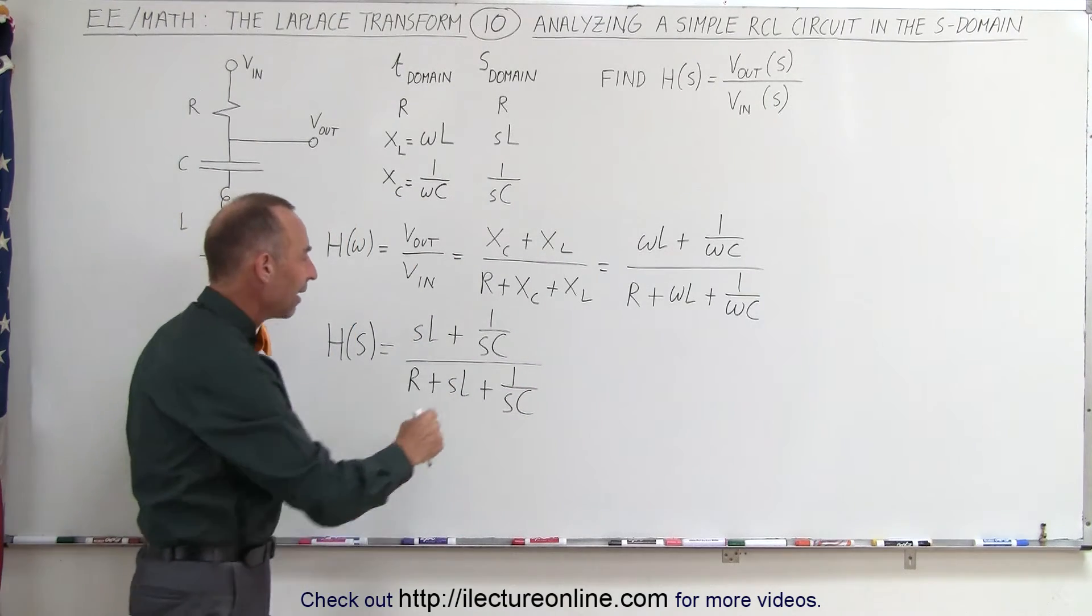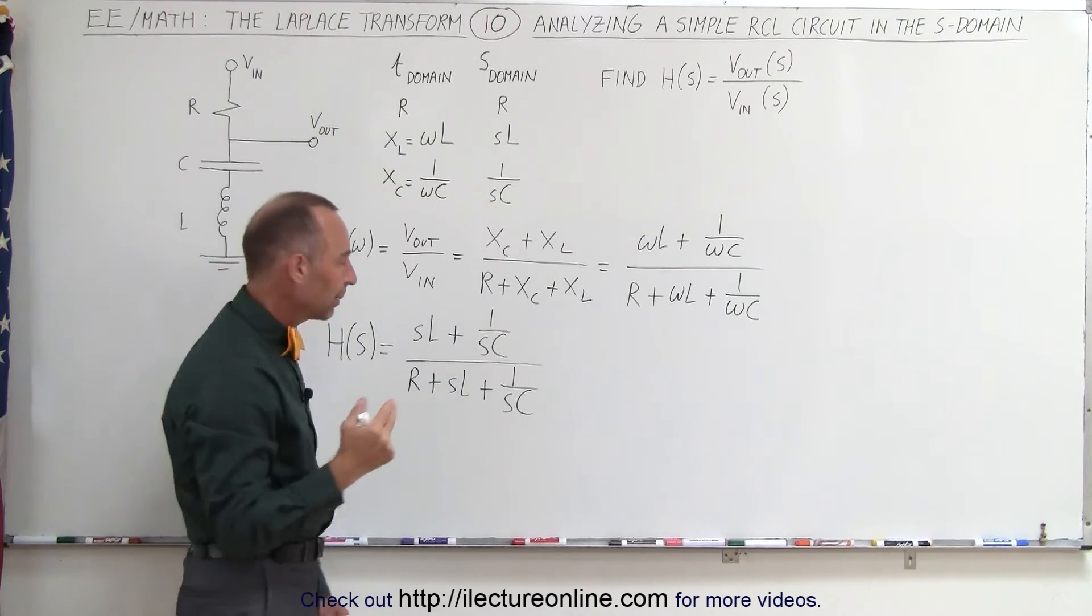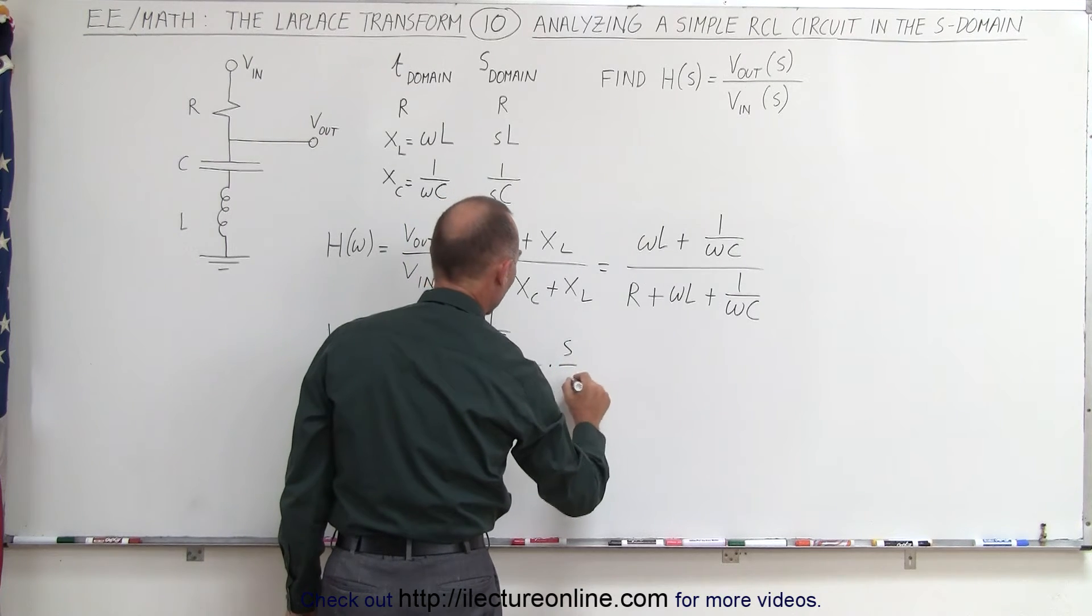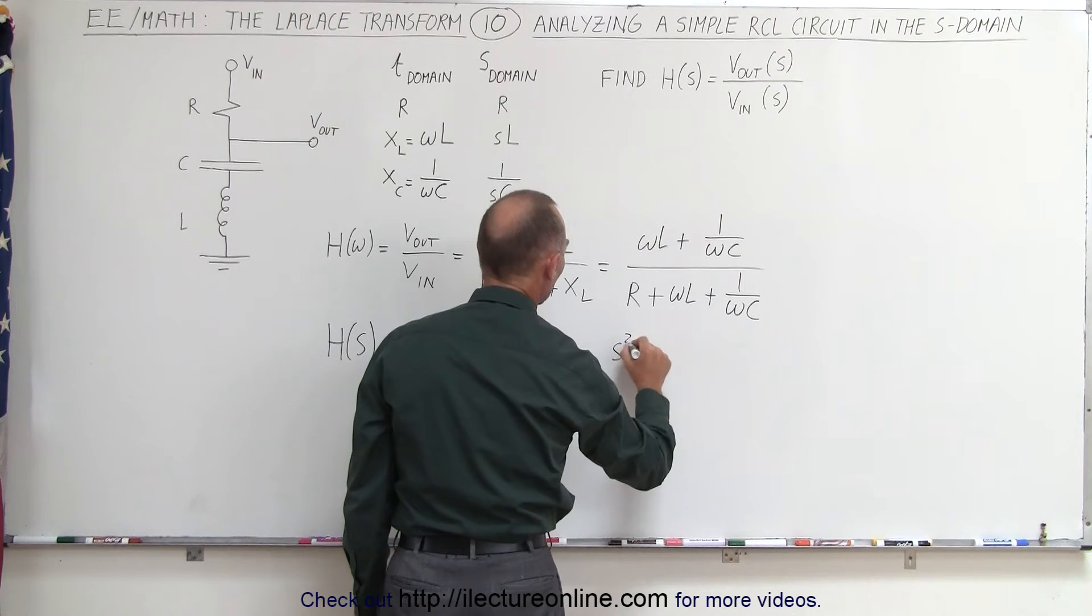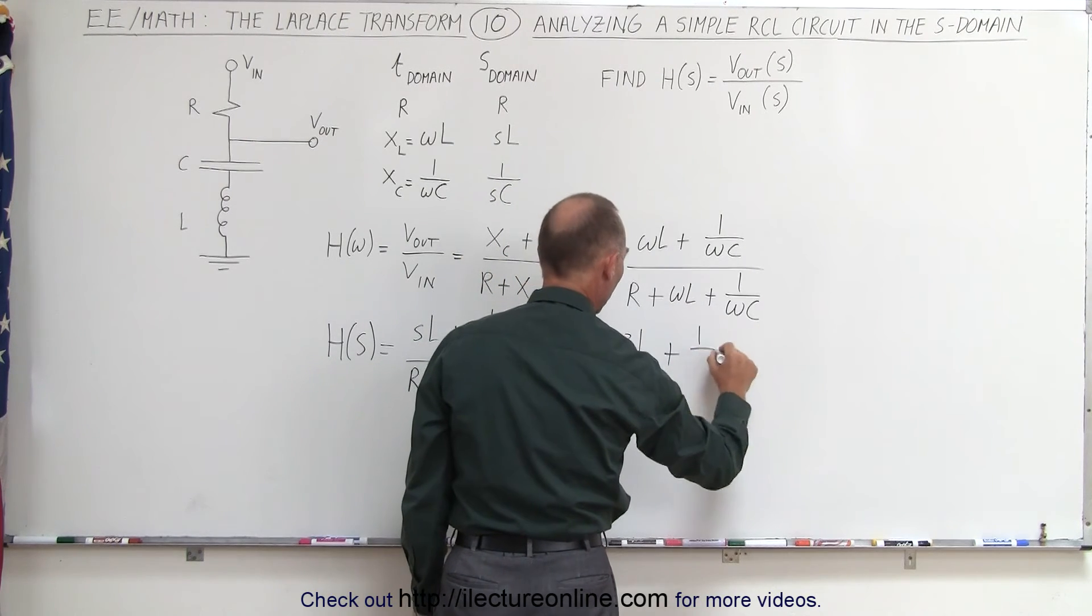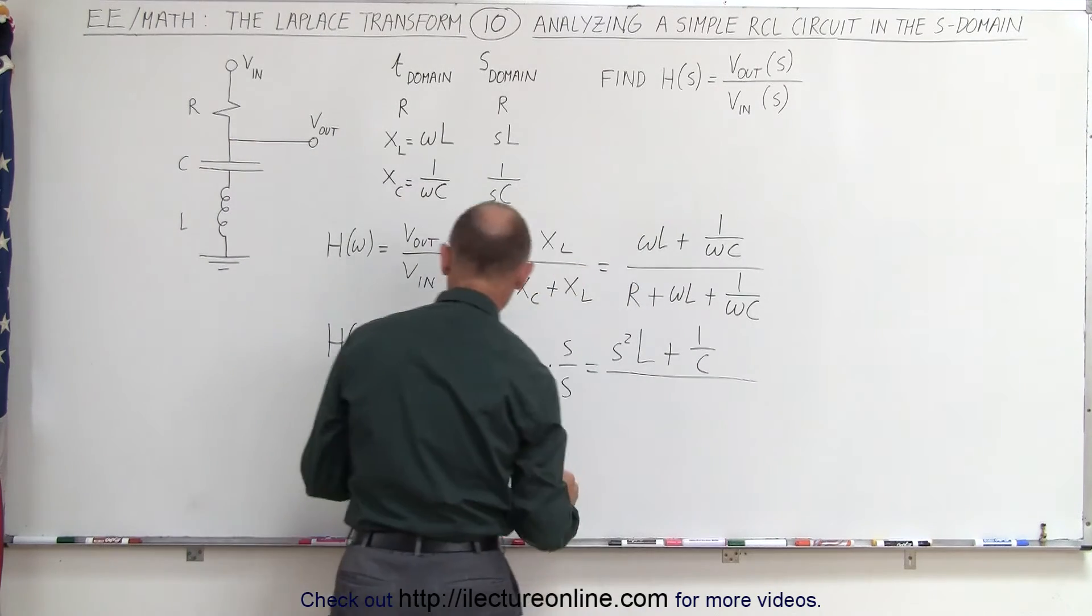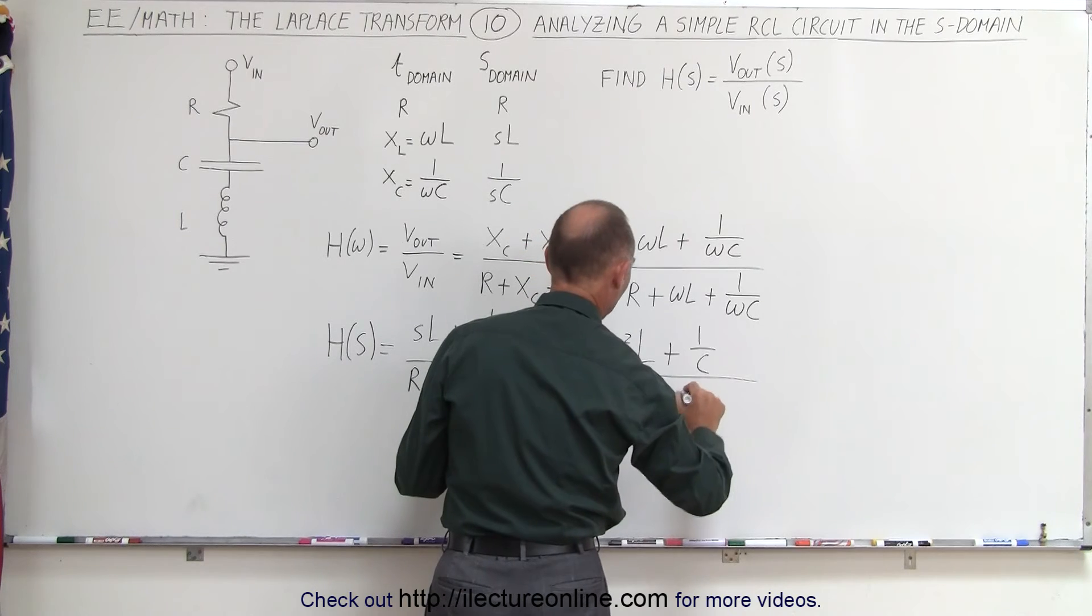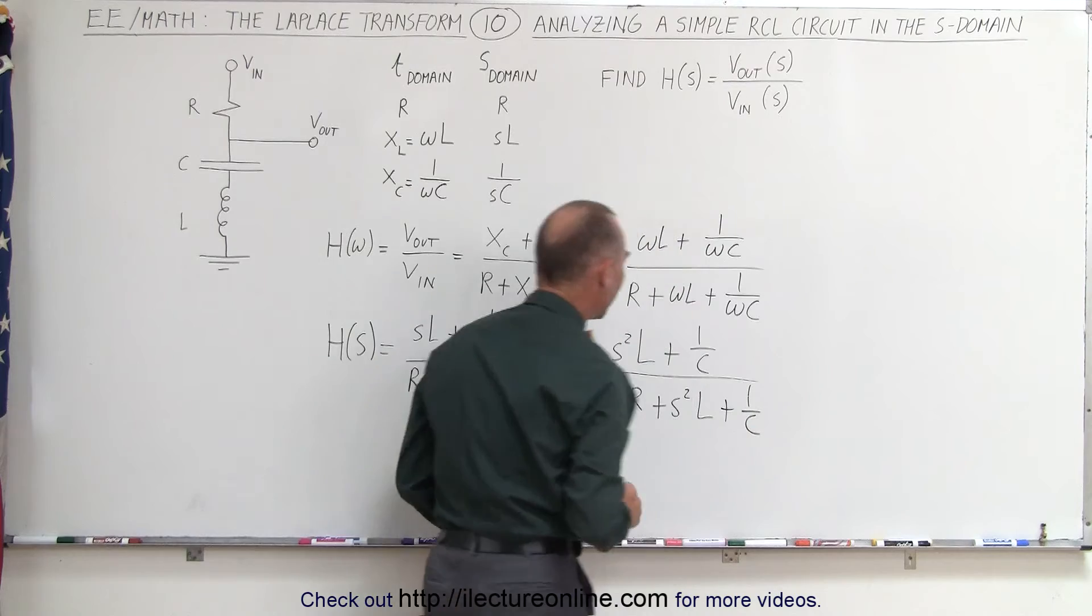And then since we don't like to have fractions here with S in the denominator, we're going to multiply both the top and the bottom by S. When we do that, we get S squared L plus 1 over C, so now the S cancels out, and in the denominator we get S times R plus S squared L plus 1 over C.